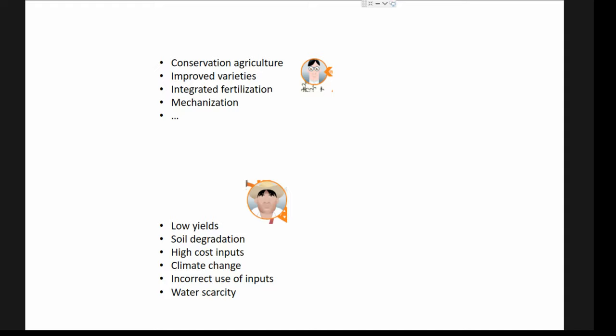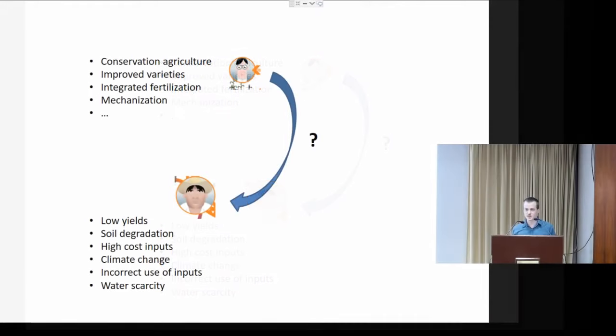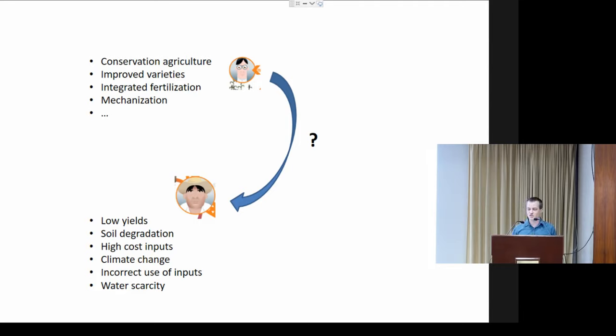But still, lots of farmers are struggling with problems like low yields, soil degradation, high input costs, and climate change. So we have to make sure that the science we are doing really benefits the farmers. How can we ensure that the work done in our research stations is also applicable for farmers and can help them?